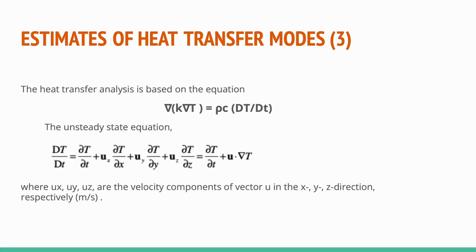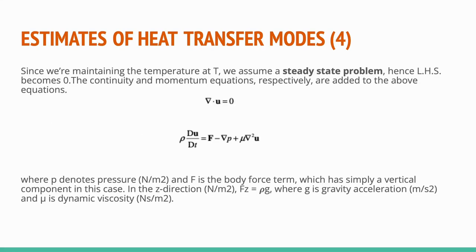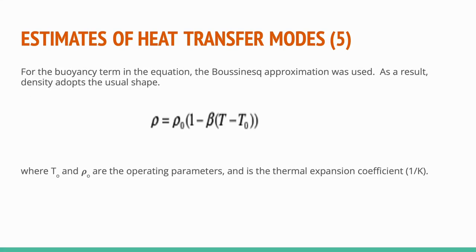The heat transfer analysis equation is: ∇k∇T = ρc ∂T/∂t. The unsteady state equation includes ux, uy, and uz, which are the velocity components of vector u in the x, y, and z directions respectively. We assume a steady-state problem as we are maintaining a fixed temperature inside the incubator. The continuity and momentum equations then become ∇·u = 0 and ρ ∂u/∂t = f − ∇p + μ∇²u. The buoyancy term in the equation then becomes ρ₀(1 − β(T − T₀)).